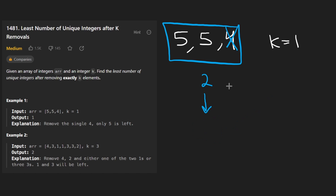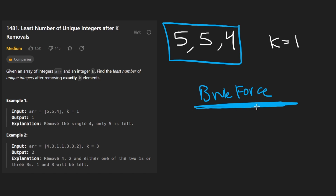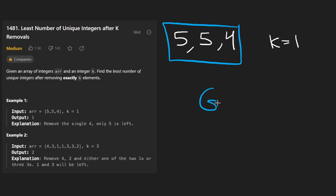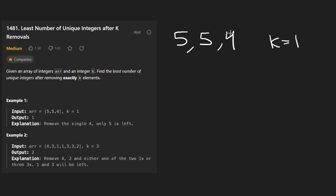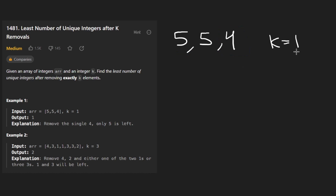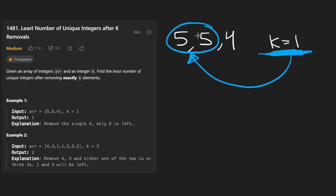You could think of a brute force approach, but before going down that route, let's hypothesize a greedy solution — it's kind of obvious here. Why would we rather remove the four than the five? Because the frequency of four is lower. Why would we ever use our k operations to remove an element with a greater frequency? It just doesn't make sense.